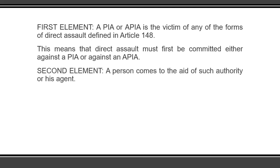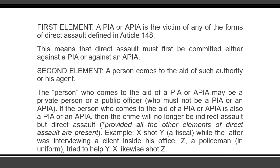The second element is that a person comes to the aid of such authority or his agent. The person who comes to the aid of a person in authority or his agent may be a private person or a public officer. Take note of the scope of the word 'person' — he may be a private individual or civilian, or a public officer. But this public officer who comes to the aid must not himself be a person in authority or an agent, because if he is, then the crime will no longer be indirect assault but direct assault.